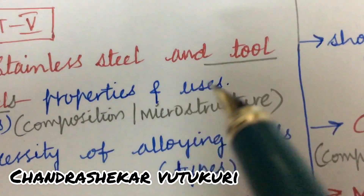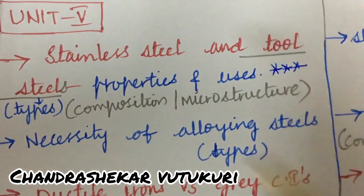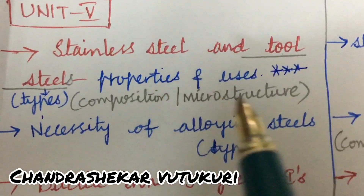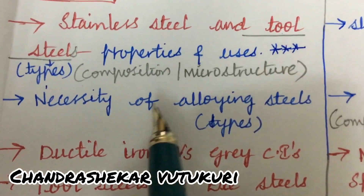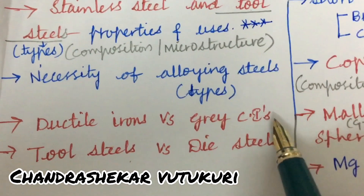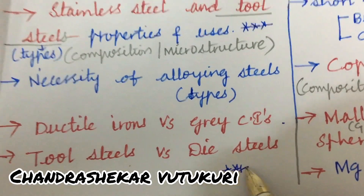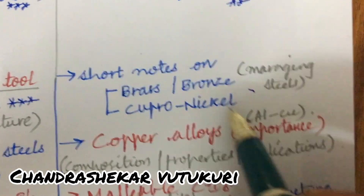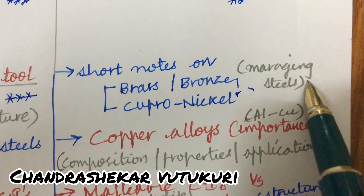Stainless steel and tool steels are said to be a very important gunshot question for 8A. The properties, uses, and tool steel types along with their composition, microstructure, and properties are very important. The necessity of alloying steels, the types, ductile iron versus gray cast iron differences, and tool steel versus die steels are said to be very important. Also, write short notes on brass, bronze, or cupronickel, and what are maraging steels.